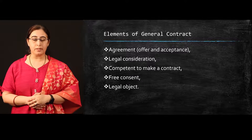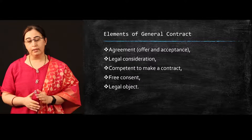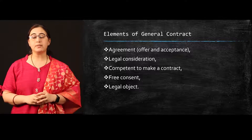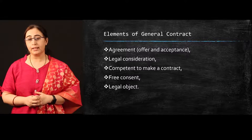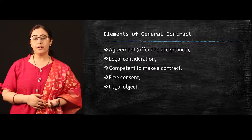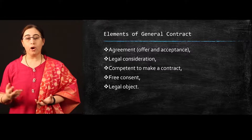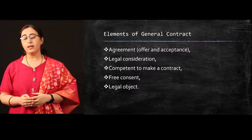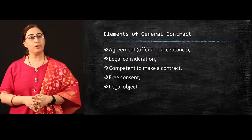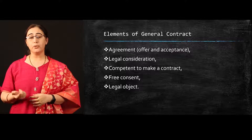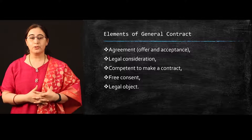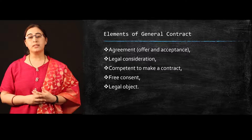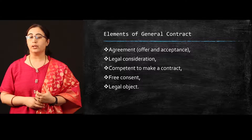The second is legal consideration — the contract must be legal. The third one is competent to make a contract. As an individual or a businessman, you must be in a position to make a contract. For example, a person is competent to make a contract but a lunatic or a minor cannot. The next one is free consent — if you are making a contract, it is your free consent, not due to pressure from anyone. And the last one is that you are making a contract for a legal object. I can't go and take an insurance of a drug or a gun — there must be a legal object for which I am taking an insurance policy.